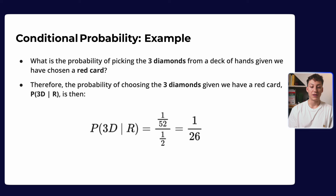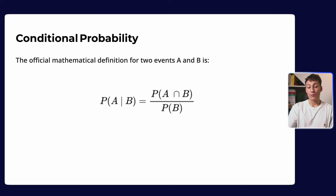The official mathematical definition is: for two events A and B, the probability of A given B equals the probability of A and B divided by the probability of B. This is a well-known result within statistics that can be proved from first principles and is used quite extensively.